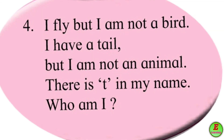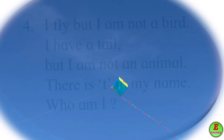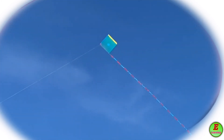Fourth riddle: I fly but I am not a bird — mi urto parantu mi pakshi nahi. I have a tail but I am not an animal — mala shepti ahe parantu mi prani nahi. There is T in my name — majha nawaat T ahe. Who am I? Answer is Kite — K-I-T-E, Kite.